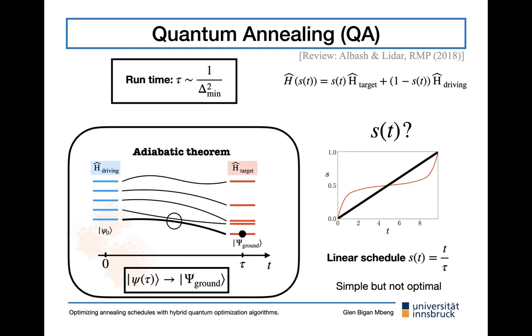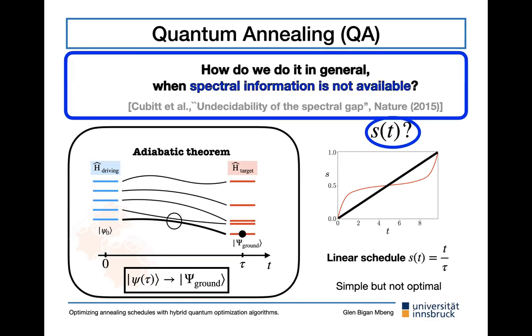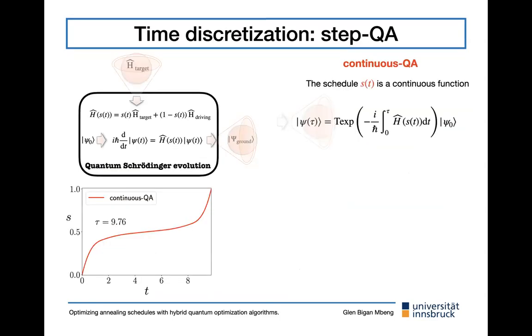This is convenient because the ground state of the initial Hamiltonian is usually easy to prepare. But there is a caveat. The evolution in particular has to be extremely slow or slower where the spectral gap of the Hamiltonian vanishes or it's close to zero. This is an issue because it's difficult to choose correctly the schedule S of T because we do not know where we have to slow down because we don't have the knowledge of where the vanishing gap is. Usually the standard choice is using a linear schedule or any other guess, but these are simple choices, but not optimal. In general, it's a problem to obtain optimal schedules without having information about the spectrum of the problem.